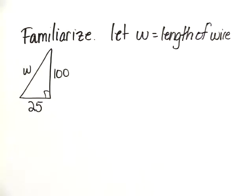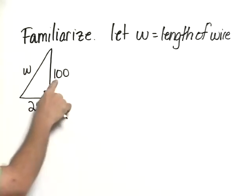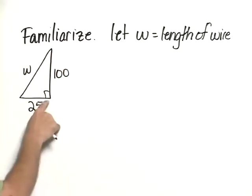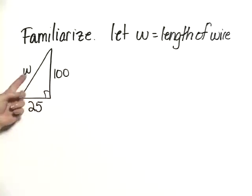How long is the wire? Step one in our five-step process is to familiarize ourselves with the problem. I drew a rough sketch where we have the tower—actually the tower extends beyond here, but I'm only interested in this part of the triangle where it's 100 feet high, where the wire attaches to the tower, and it's 25 feet out from the base. W, which is what we'll let the length of the wire equal, would be representing this part of the triangle.